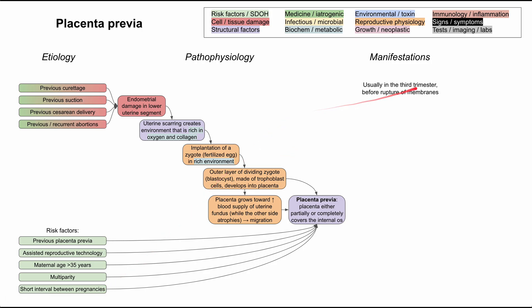Now let's get into the manifestations of placenta previa. It usually presents in the third trimester before the rupture of membranes, and the presenting symptom is usually a sudden, painless, bright red vaginal bleeding. The fact that it happens before rupture of membranes is relevant because the gestational sac can exert more pressure on the placenta, which is why it typically occurs when the gestational sac gets large in the third trimester.